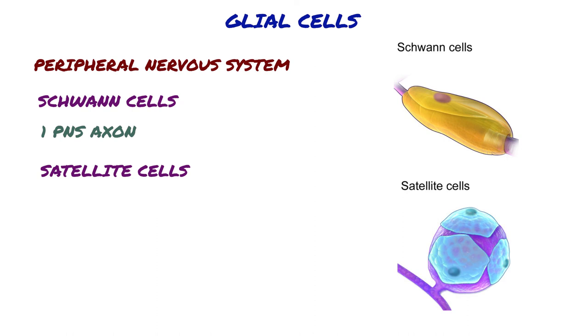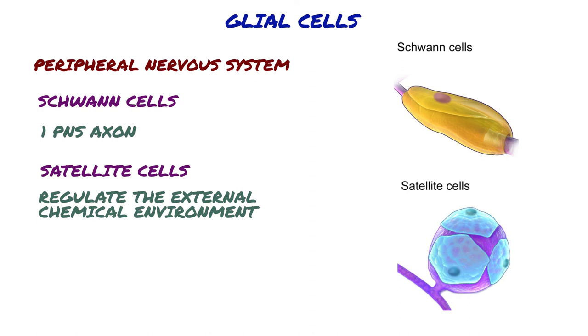Satellite cells are small cells that surround neurons in sensory, sympathetic, and parasympathetic ganglia. These cells help regulate the external chemical environment. Like astrocytes, they are interconnected by gap junctions and respond to ATP by elevating the intracellular concentration of calcium ions. They are highly sensitive to injury and inflammation and appear to contribute to pathological states.